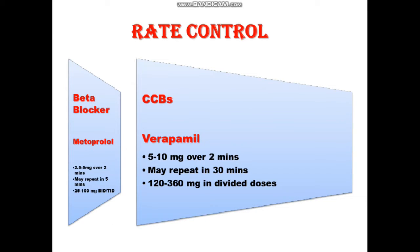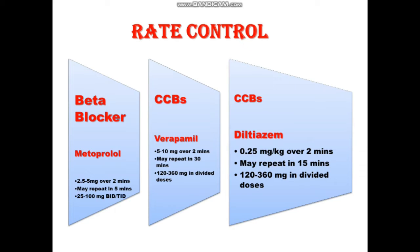Next are calcium channel blockers. The two cardioselective calcium channel blockers used for rate control are verapamil and diltiazem. Verapamil, also known as Isoptin or Calan, has a loading dose of 5 to 10 mg over 2 minutes — usually 5 mg — and may be repeated in 30 minutes. Its maintenance dose is 120 to 360 mg per day in BID or TID doses, which is the same as diltiazem. The loading dose for diltiazem is 0.25 mg per kg over 2 minutes, repeated after 15 minutes if heart rate is still not controlled.